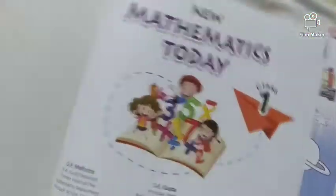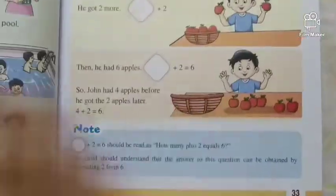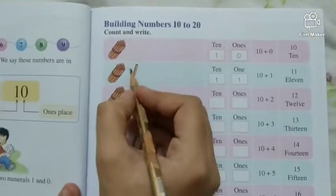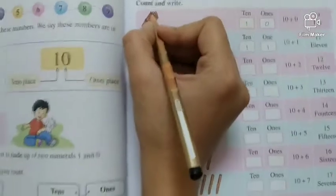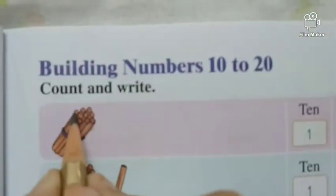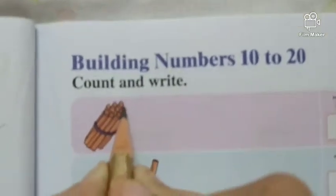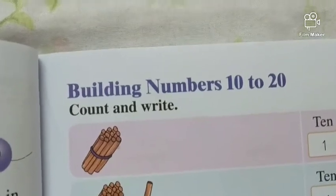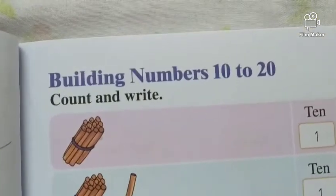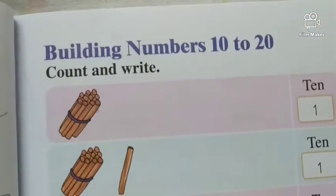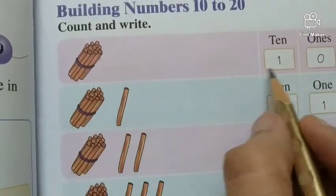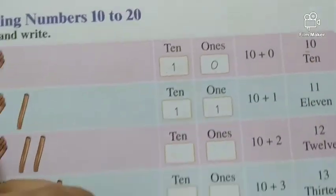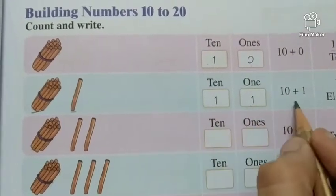Now, come to page number 41. Count and write. See, this is a bundle of 10 sticks. This is a bundle of 10 sticks. So, we will count it as 1 tenth. Or, we will read it as 1 tenth. So, we will read it as 1 tenth and count 1 separately. See, this is 1 tenth and 0 ones. 1 tenth and 0 ones is equal to 10. Next, 1 tenth and 1. 1 tenth and 1 one is equal to 11.